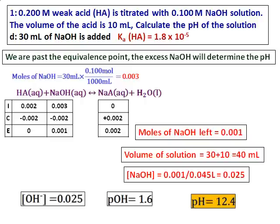If you want, you can try that calculation — it is similar to what we did in part C. You will see that it gives a small value. So when you have a strong base, it is enough to take the contribution from the strong base to calculate the pH.